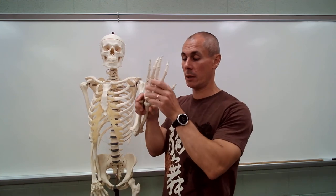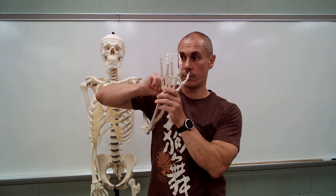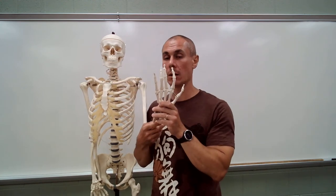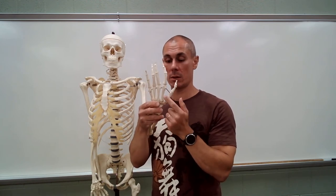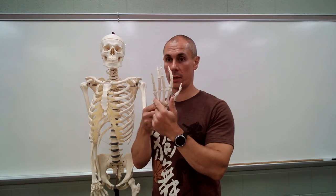What about these five bones? These are metacarpals. Same way — numbered one through five. Nothing too complicated.